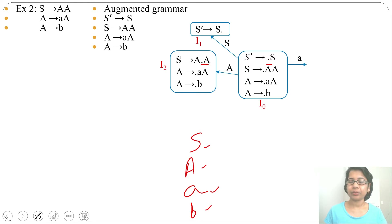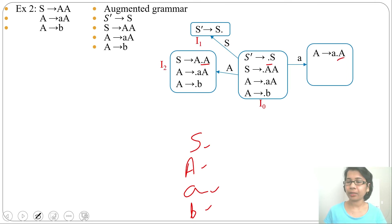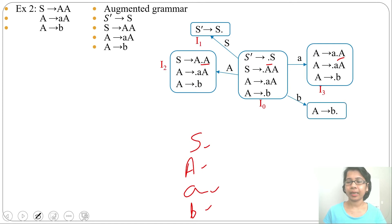Next, the terminal a transition from I0: by terminal a it goes to a new state with first production A → a•A. There is a dot before variable A, so we write closure: A → •AA and A → •B. We assign state name I3. Next, the b transition from I0: by terminal b it goes to a new state with production A → b•. This is a reduction. We assign state name I4.